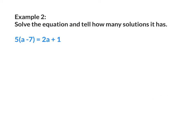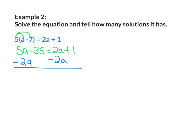Example 2: solve the equation and tell how many solutions it has. Since 5 is on the outside of the parentheses, I'm going to distribute it to a and to negative 7. 5 times a gives me 5a; 5 times negative 7 gives me negative 35. Bring everything else down: equals 2a plus 1. I'm going to move the 2a to the left side by subtracting 2a from both sides. 5a minus 2a gives me 3a; bring down negative 35; 2a minus 2a cancels out; bring down 1.